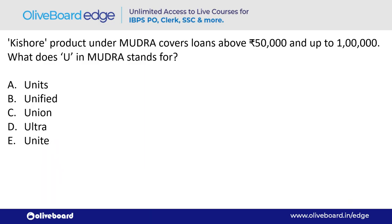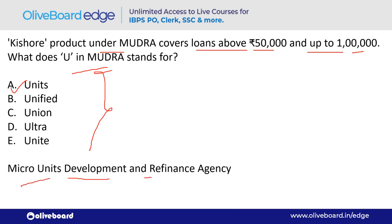The first question: the Kishore product under MUDRA covers loans above fifty thousand and up to one lakh. What does 'U' in MUDRA stand for? You know that the MUDRA loan has three products: Shishu, Kishore, and Tarun. Kishore covers 50,000 to one lakh. The correct answer is option A — MUDRA stands for Micro Units Development and Refinance Agency.